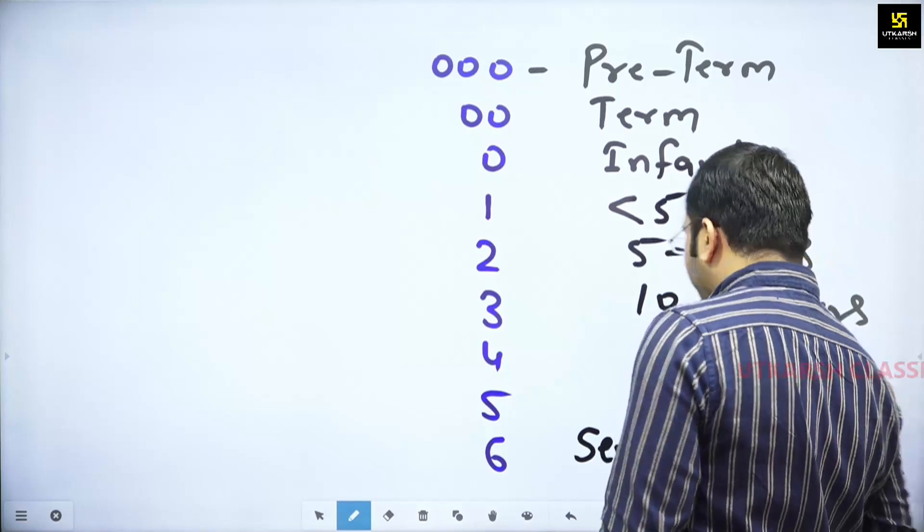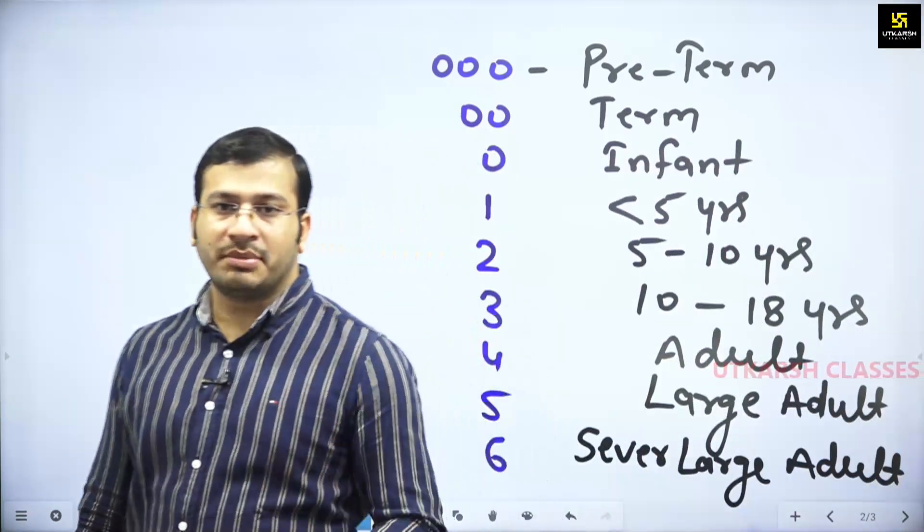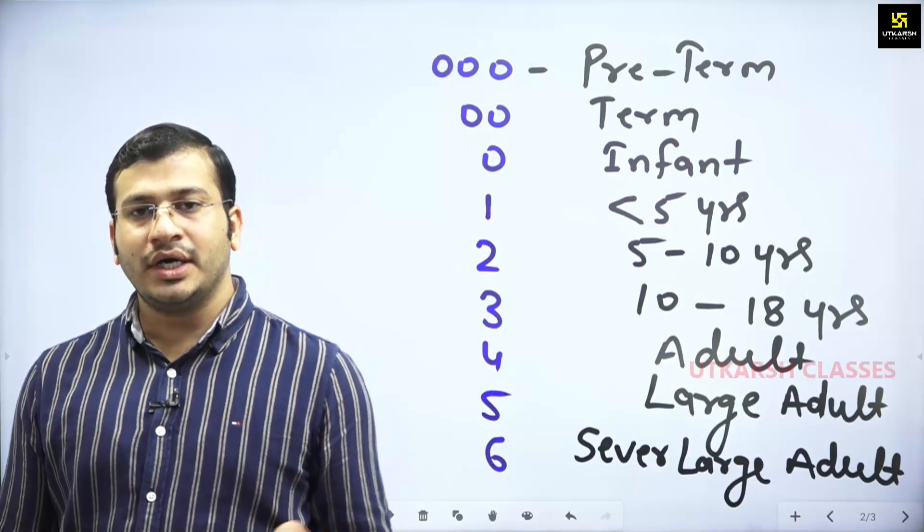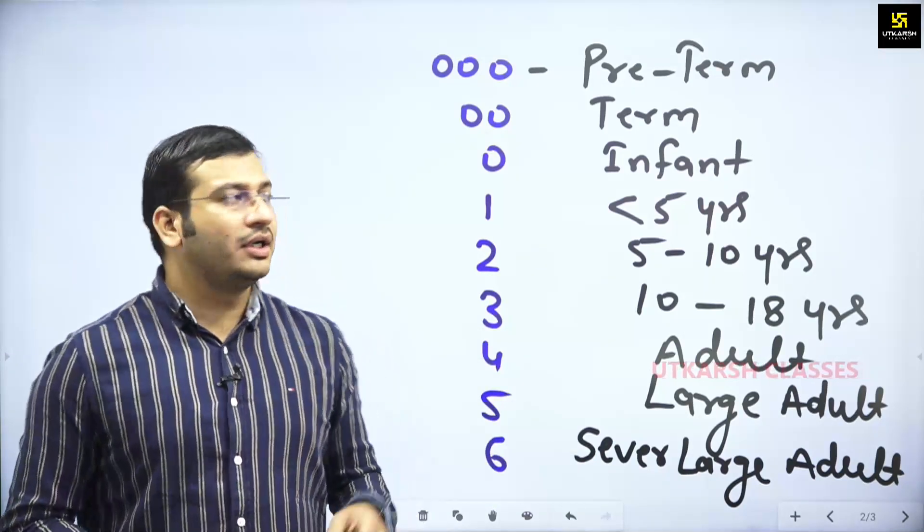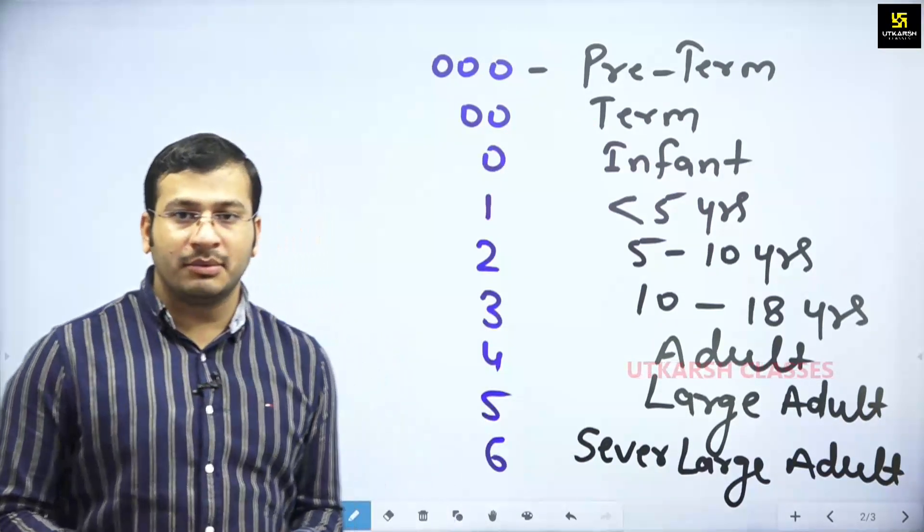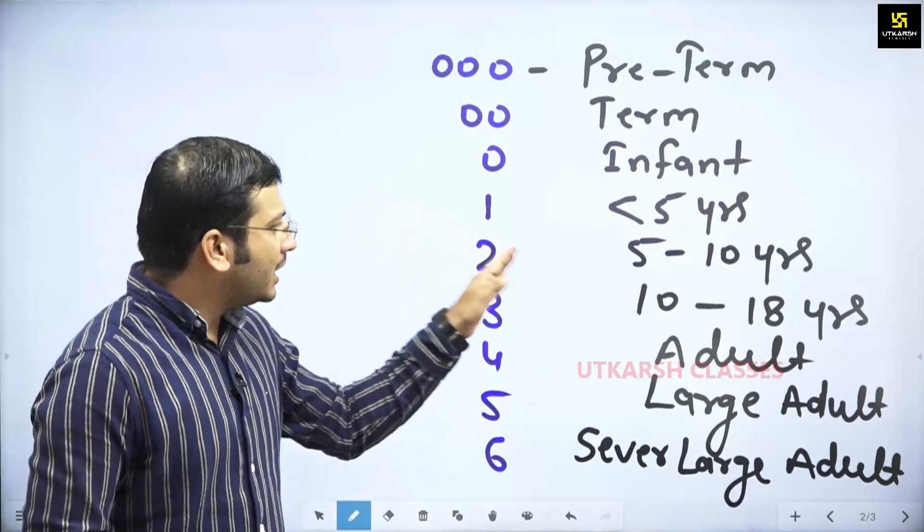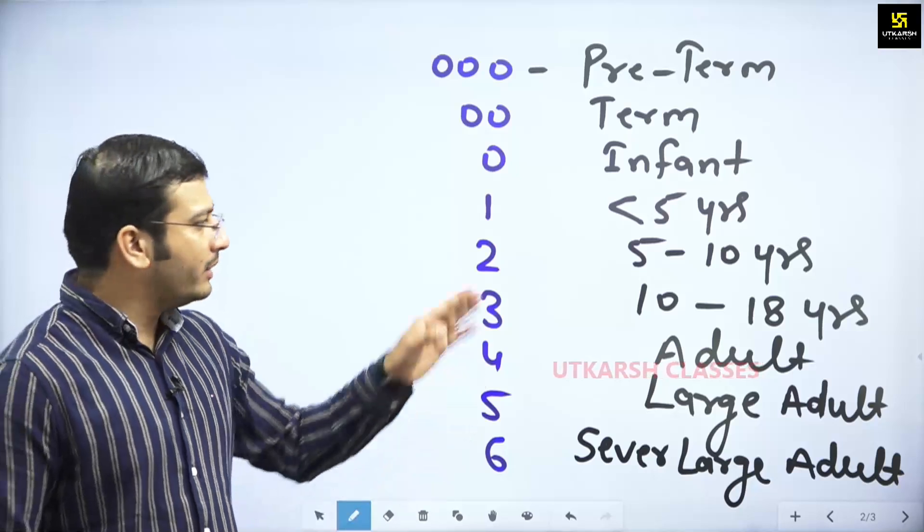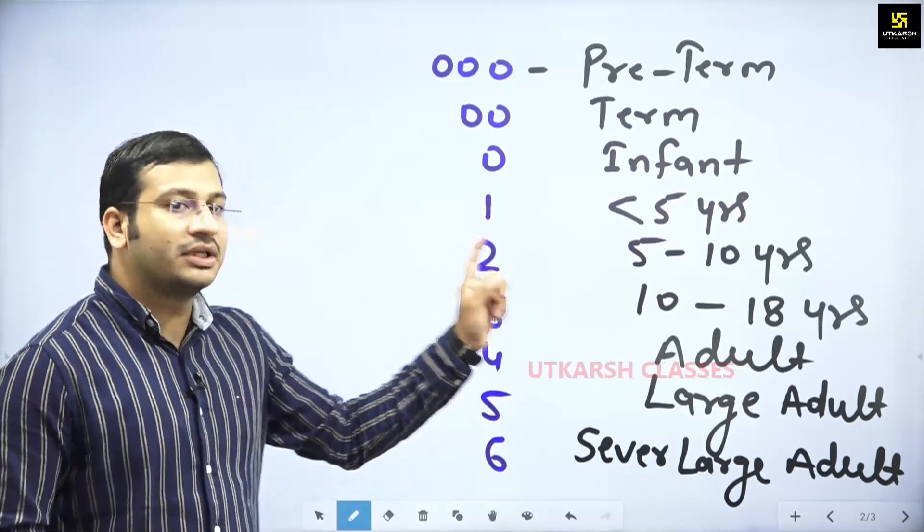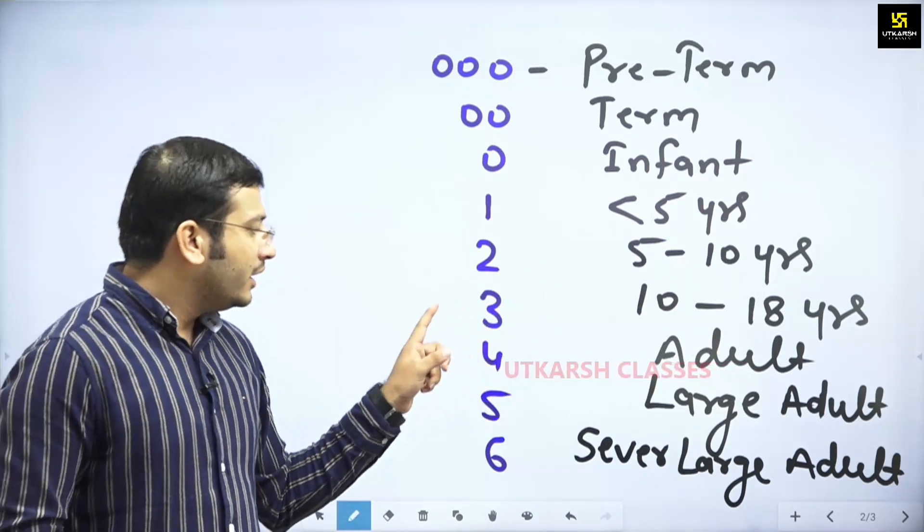I have written some sizes in front of you: 000, 00, 0, 1, 2, 3, 4, 5, 6. First of all pre-term baby, after term baby we have 00, size 0 in infant, number 1 is 5-10 years, 2 is 10-18 years, 3 is adult.